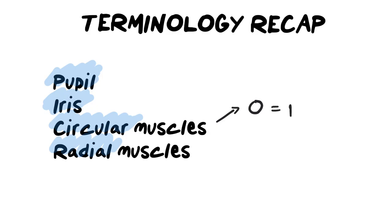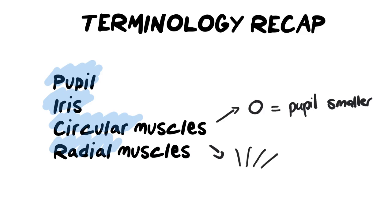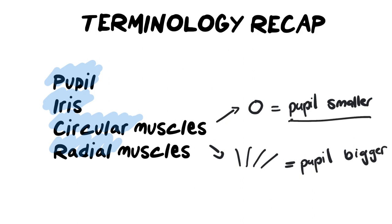We are therefore making the pupil smaller. Whereas if we're using the radial muscles — those long elongated muscles — then we are making the pupil bigger. Depending on which one is doing the work will determine if we're making the pupil bigger or smaller. If the circular is working, we're making the pupil smaller; if the radial are doing the work, the pupil is getting bigger.